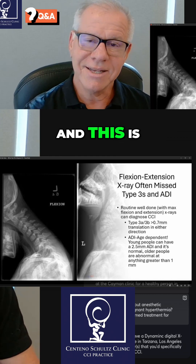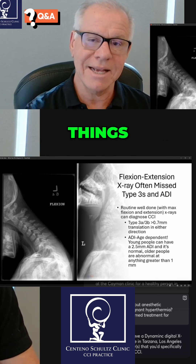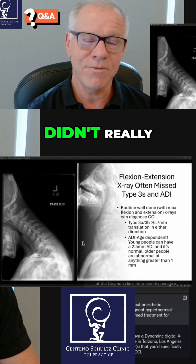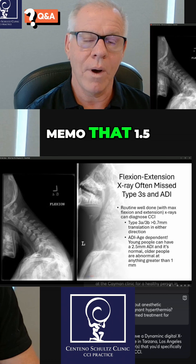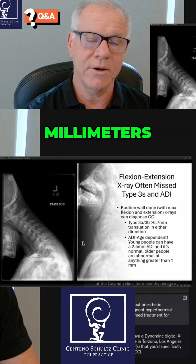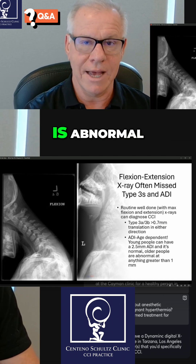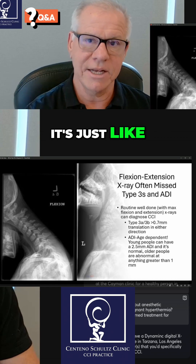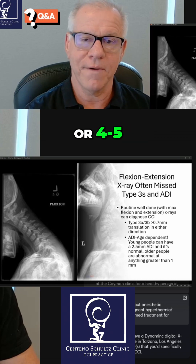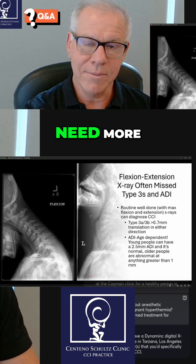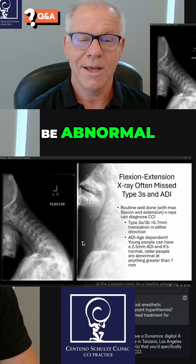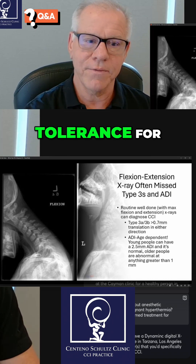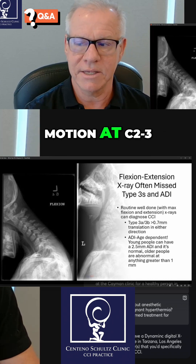This is where I commonly see things are missed. The reading radiologist didn't get the memo that 1.5 millimeters of translation at C2-3 is abnormal, because they're thinking it's just like C3-4, 4-5, 5-6, where you would need more movement to be abnormal. They didn't read the papers stating there's less tolerance for motion at C2-3.